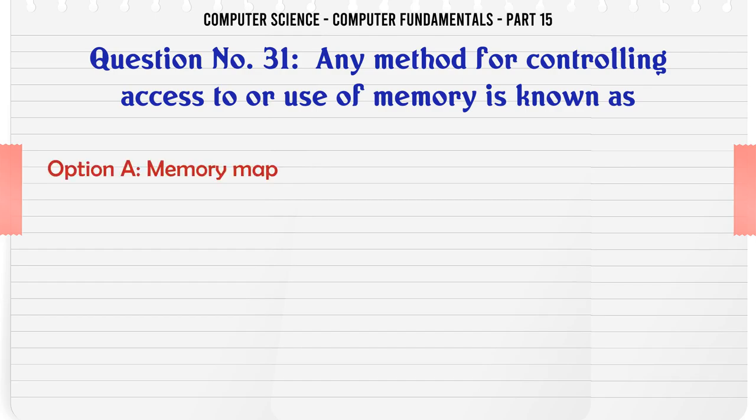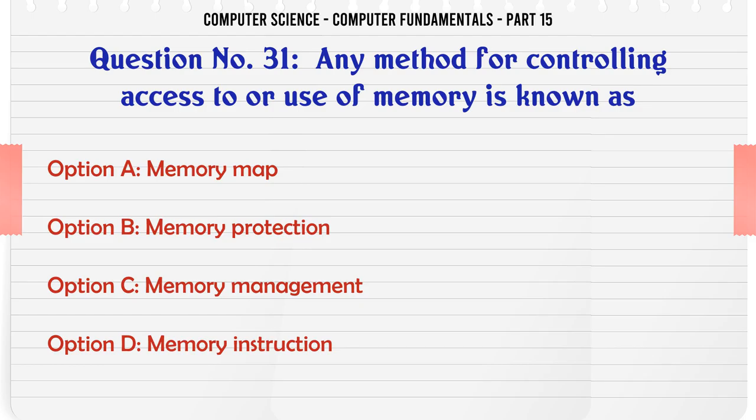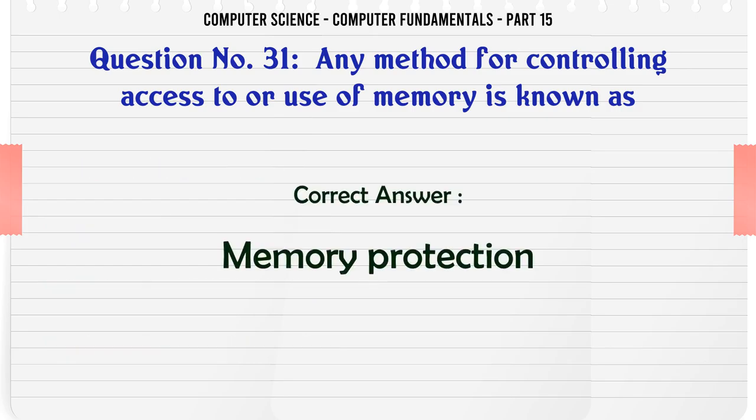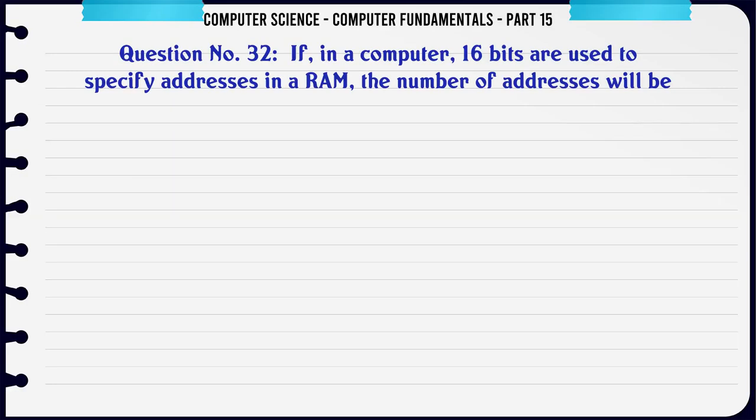Any method for controlling access to or use of memory is known as: A. Memory Map B. Memory Protection C. Memory Management D. Memory Instruction. The correct answer is Memory Protection.